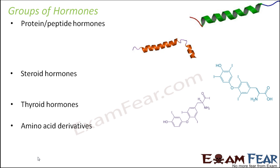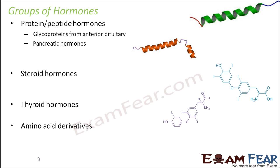When we say protein hormones, they will have protein structures. Examples of protein hormones would be the glycoproteins secreted from the anterior pituitary, or the pancreatic hormones from the islet of Langerhans — insulin and glucagon. Now, why are they divided into these four classes? It is based on their structure: those hormones whose structures are similar to proteins or which contain a lot of peptides are protein or peptide hormones.